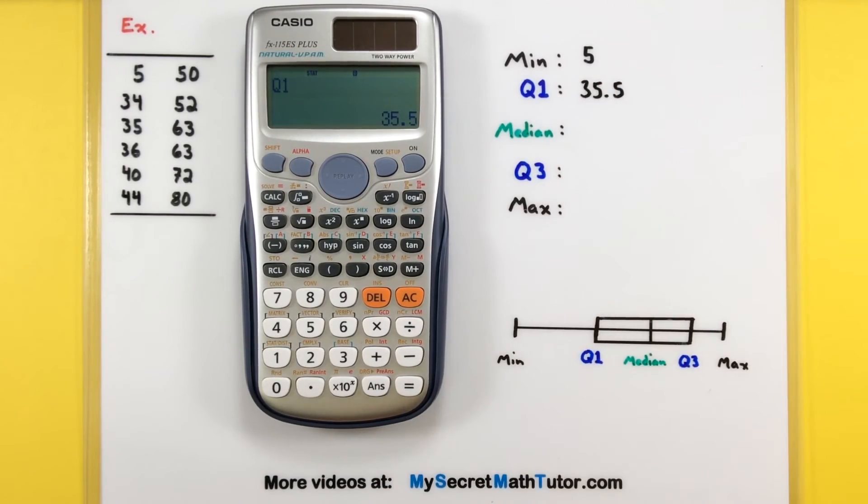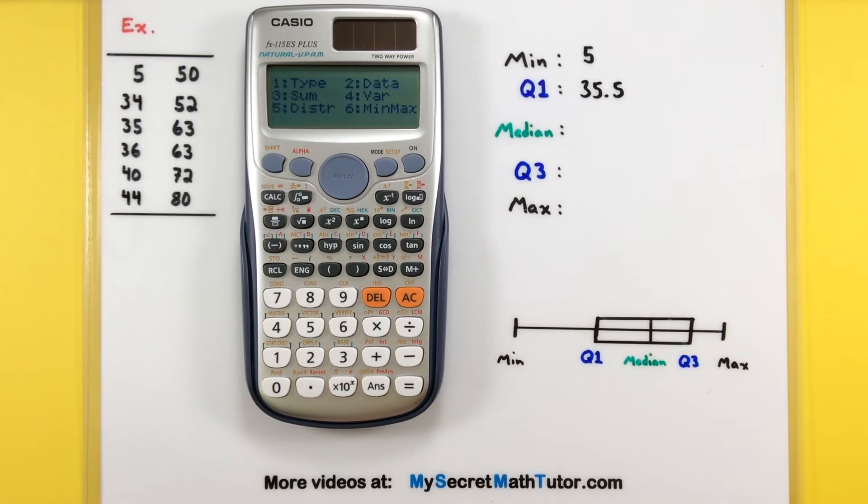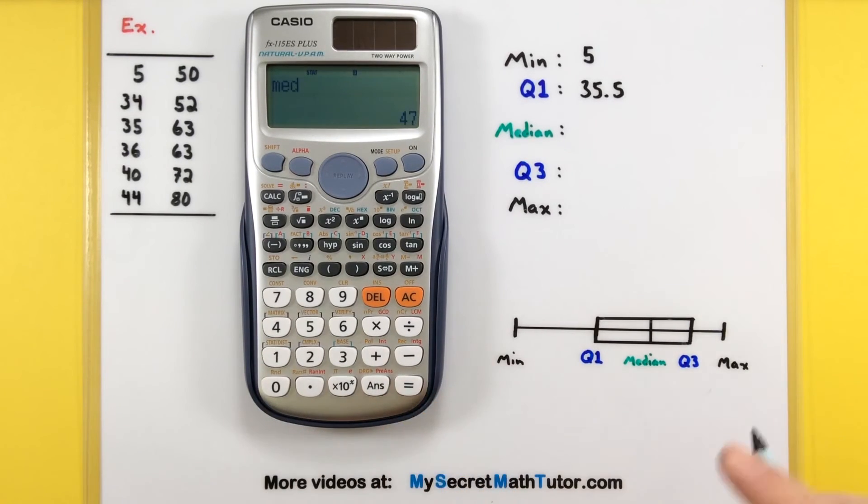So you're really just going to repeat this process for all the rest. Shift one, min max. Now we're looking for the median. That's listed as number four. Sounds good. 47.